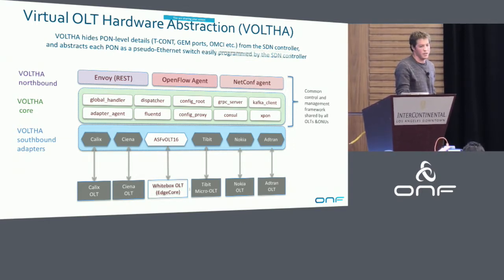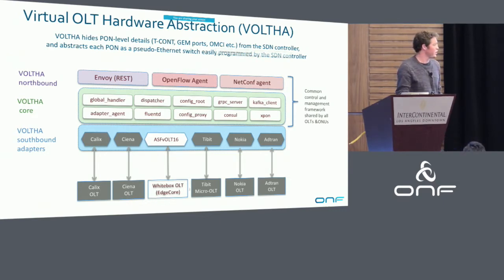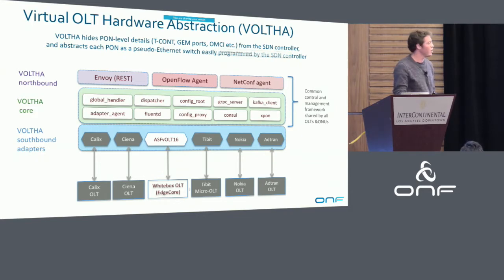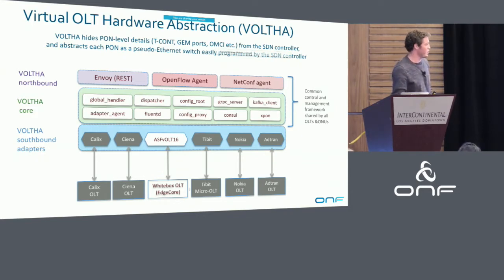We were initially starting with PON networks — GPON and XGS-PON — but there's a desire going forward to move to other types of PON and also other types of wireline access equipment, such as G.fast and other things like that.